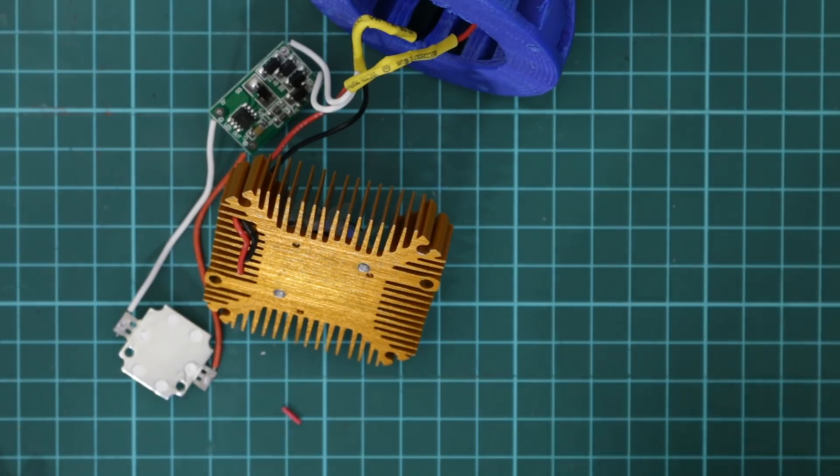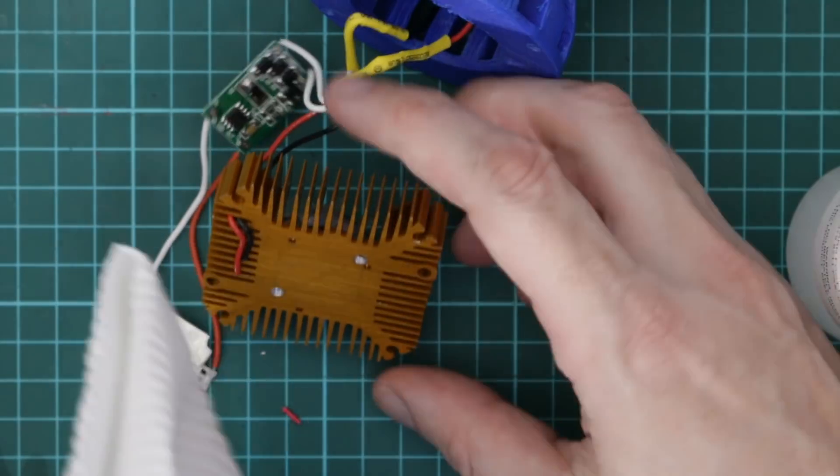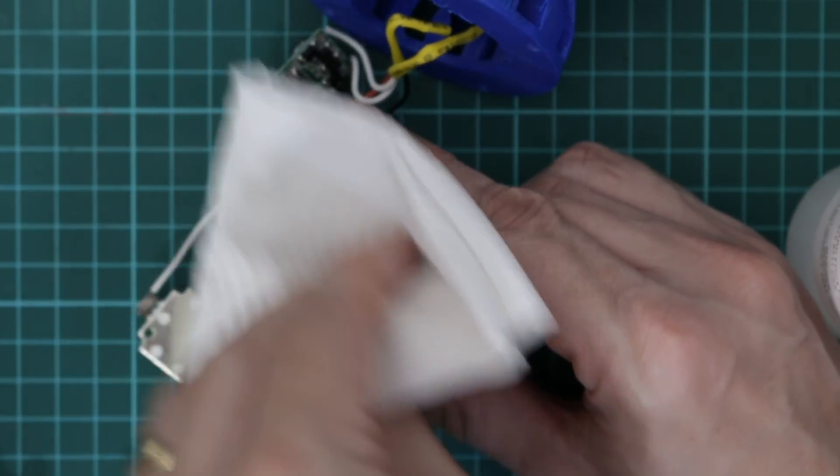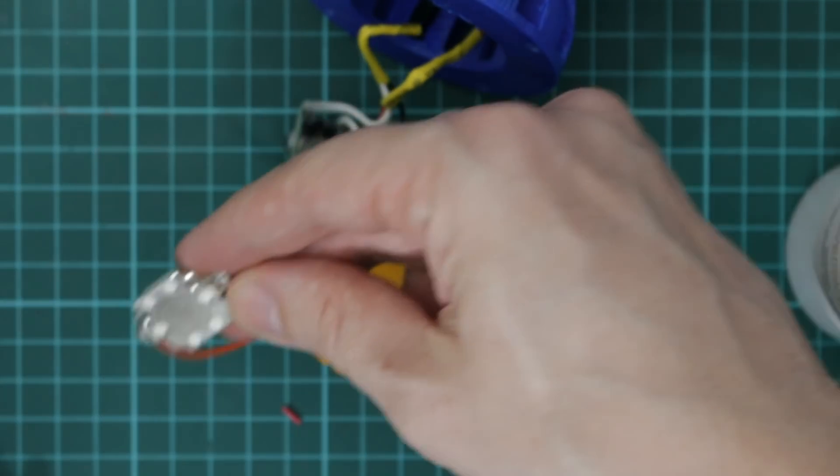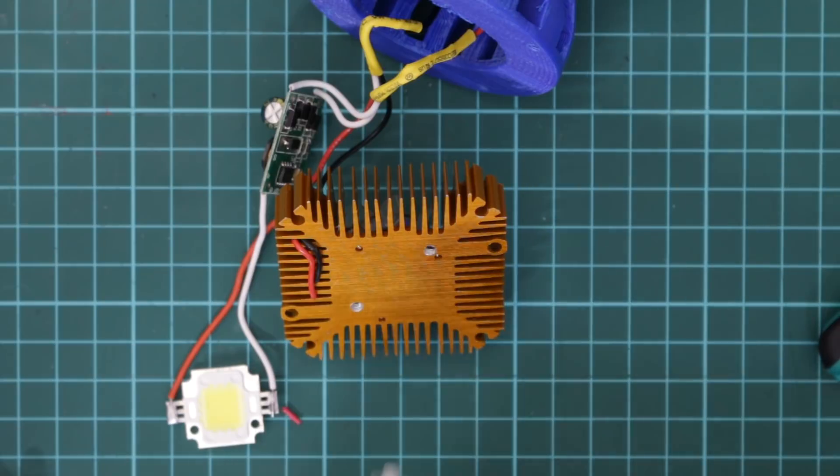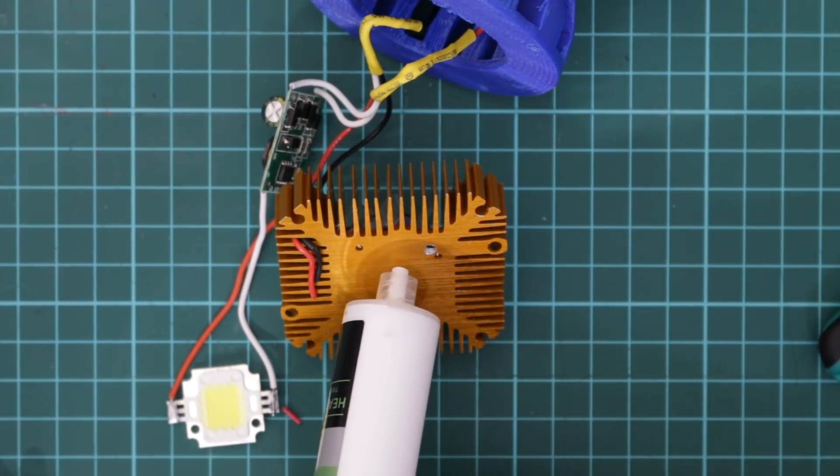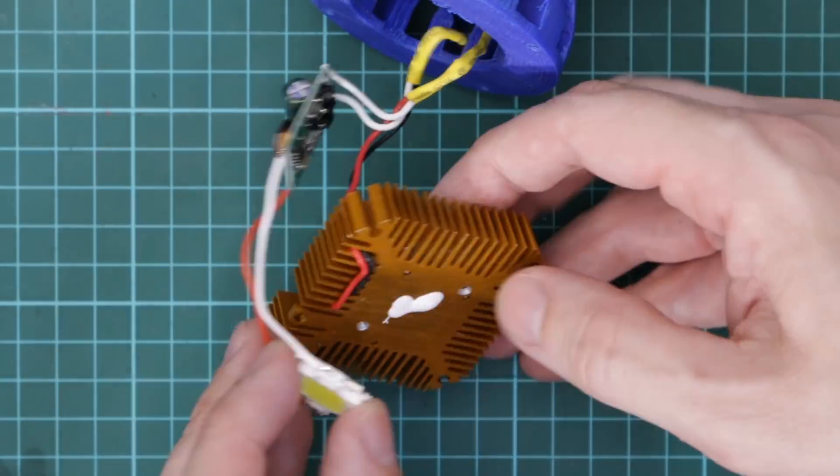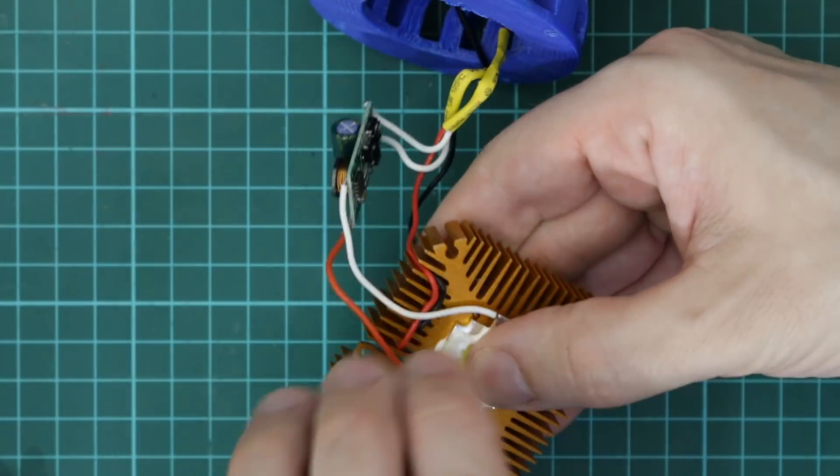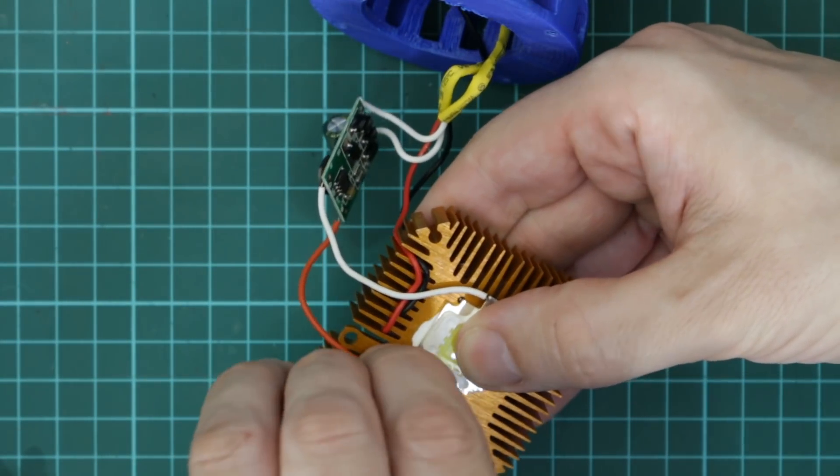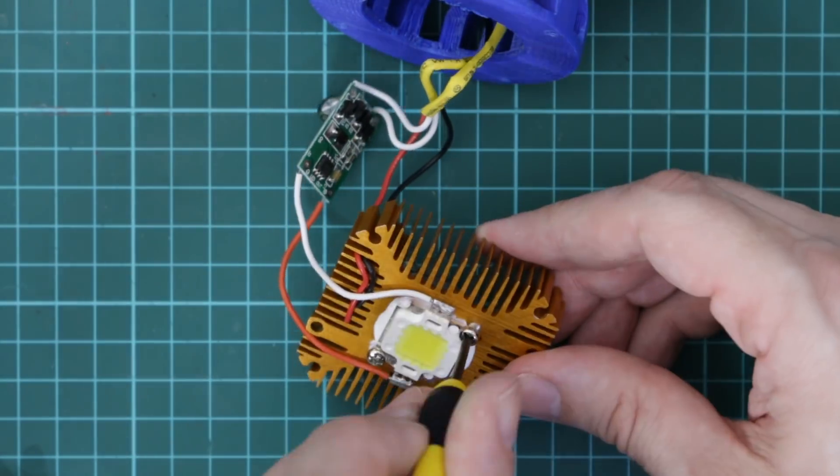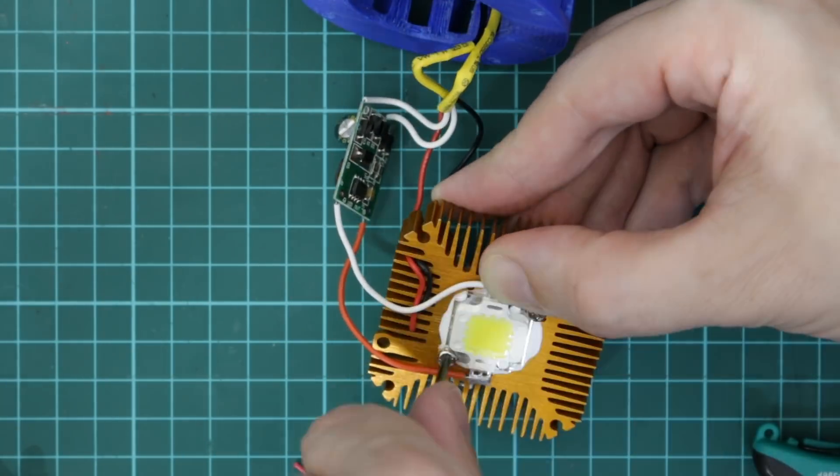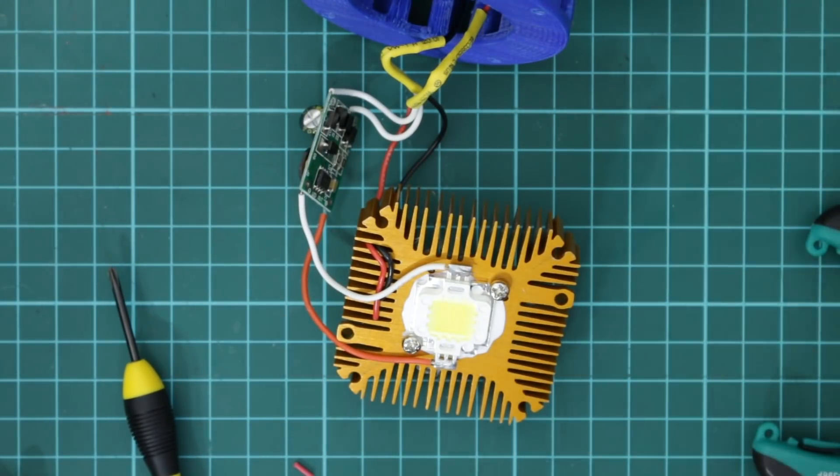Next I'm just going to wipe the heat sink and the LED with some isopropyl alcohol just to clean off any gunk so that the thermal paste will make good contact. So I'm just going to put a little blob in the middle there. I think it's maybe a bit too much. I'll just give that a little wipe.